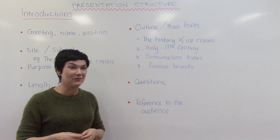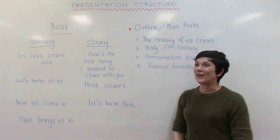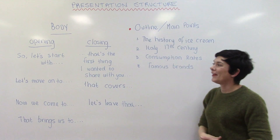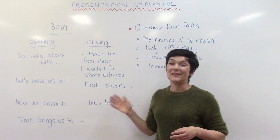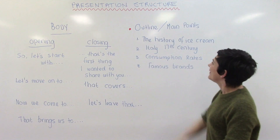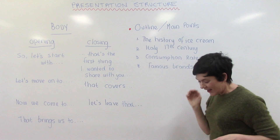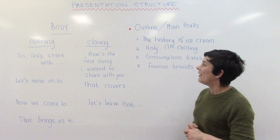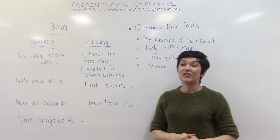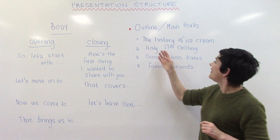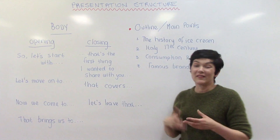Now let's have a look at the body. For each of your subtopics you need to open and close each section. For example, introduce your first topic by saying: 'So let's start with the history of ice cream.' After sharing a few details and examples, close it with: 'So that's the first thing I wanted to share with you. Now let's move on to Italy — let's have a look at the 17th century.'